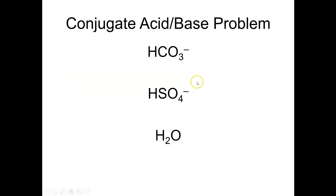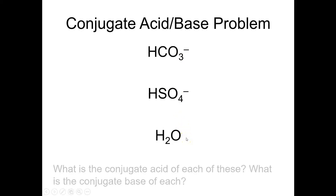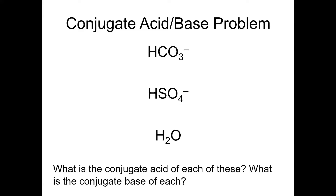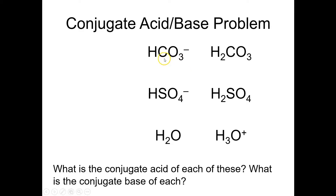Let's go back to those amphoteric species, because this makes a great problem. Since each of these can go in either direction, each one has both a conjugate acid and a conjugate base. To go from a base to its conjugate acid, you add an H⁺. When I add an H⁺ to bicarbonate, I get carbonic acid. When I add an H⁺ to bisulfate, I get sulfuric acid. When I add an H⁺ to water, I get hydronium. So each of these is the conjugate acid of the corresponding amphoteric species.